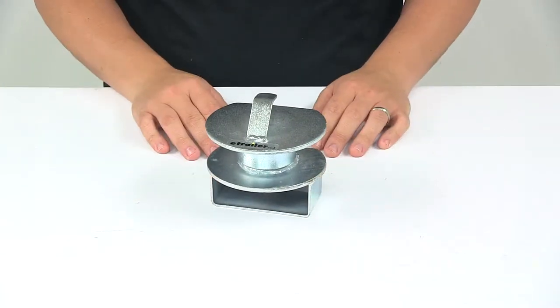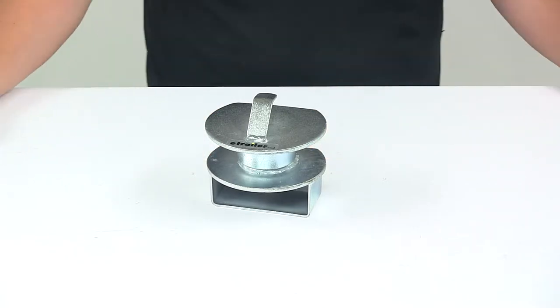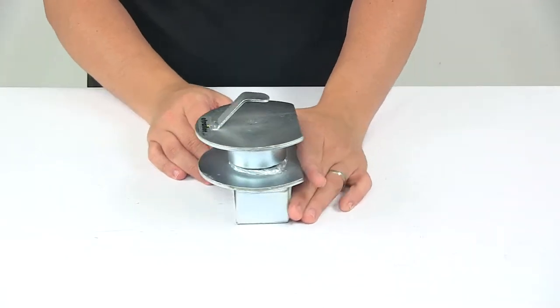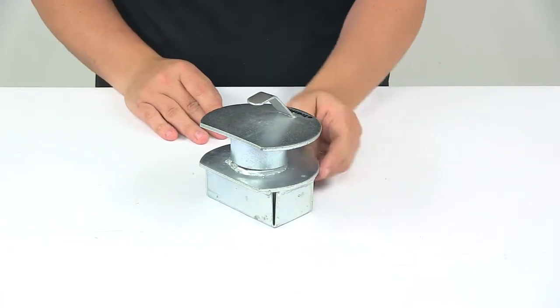Today we're taking a look at a lock for two and a half inch and three inch inner diameter lunette rings. The lock helps deter trailer theft by filling the eye of your drawbar when not in use.